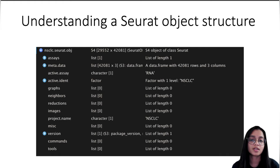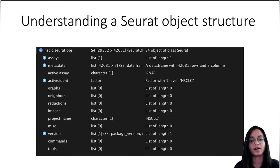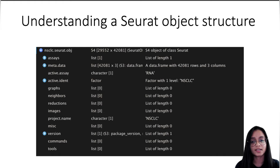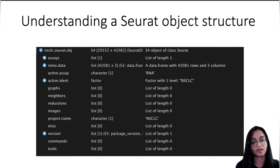A Seurat object has a lot of slots which store different kinds of information about our experiment. Seurat allows us to store one or multiple experiments in the assay slot — for example, single cell RNA-seq as well as single cell ATAC-seq experiments. We can access information about each cell, number of features, and original identity in the metadata slot. We can also access dimensionality reductions performed on our data in the reduction slot, and the command slot gives information about all commands that have been run on the Seurat object.